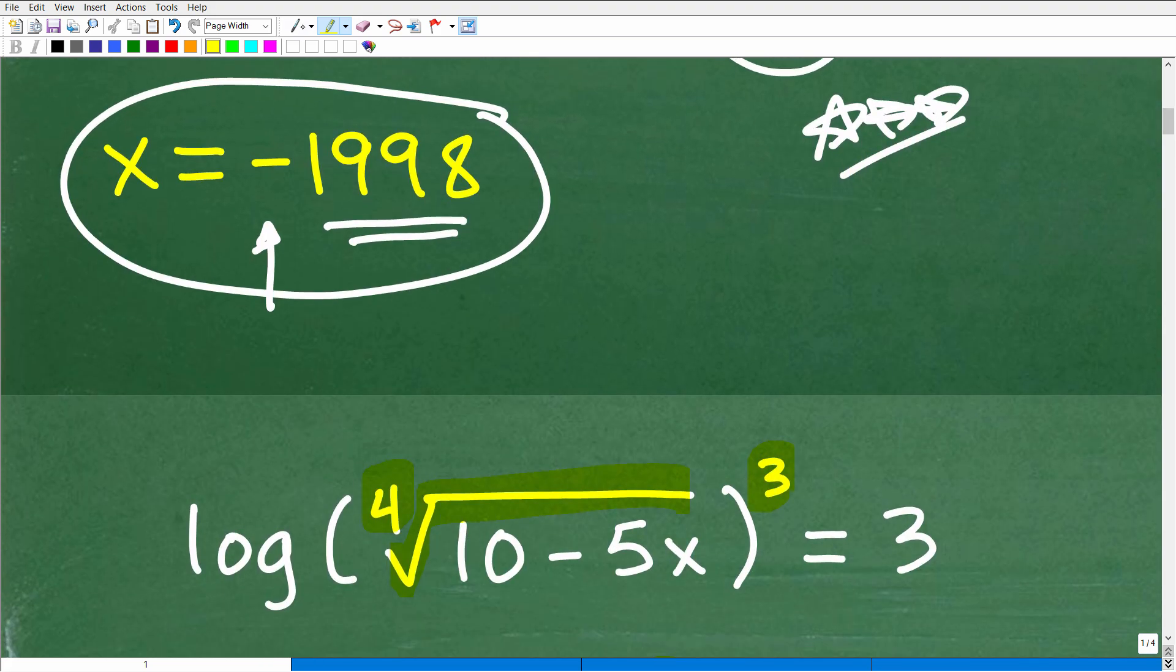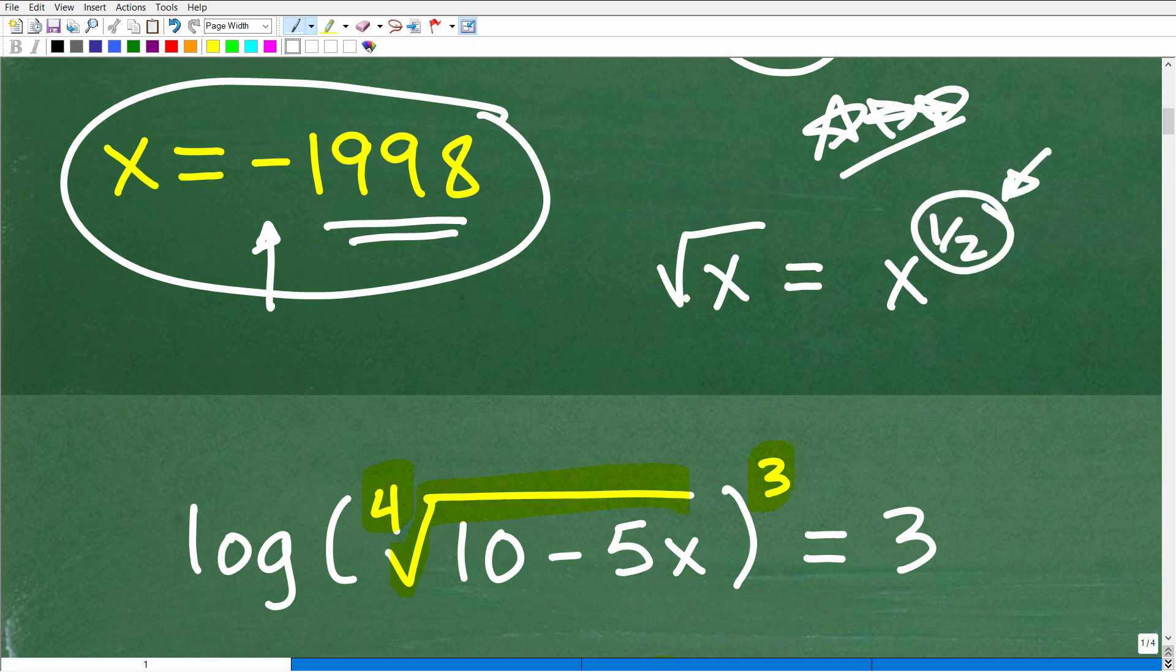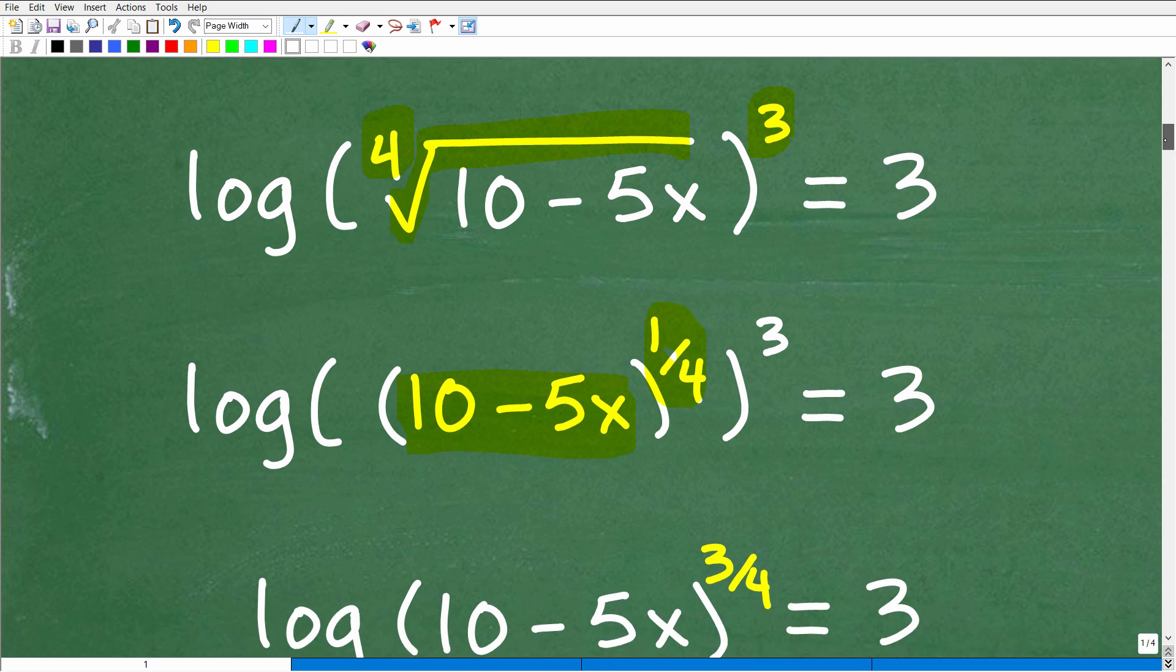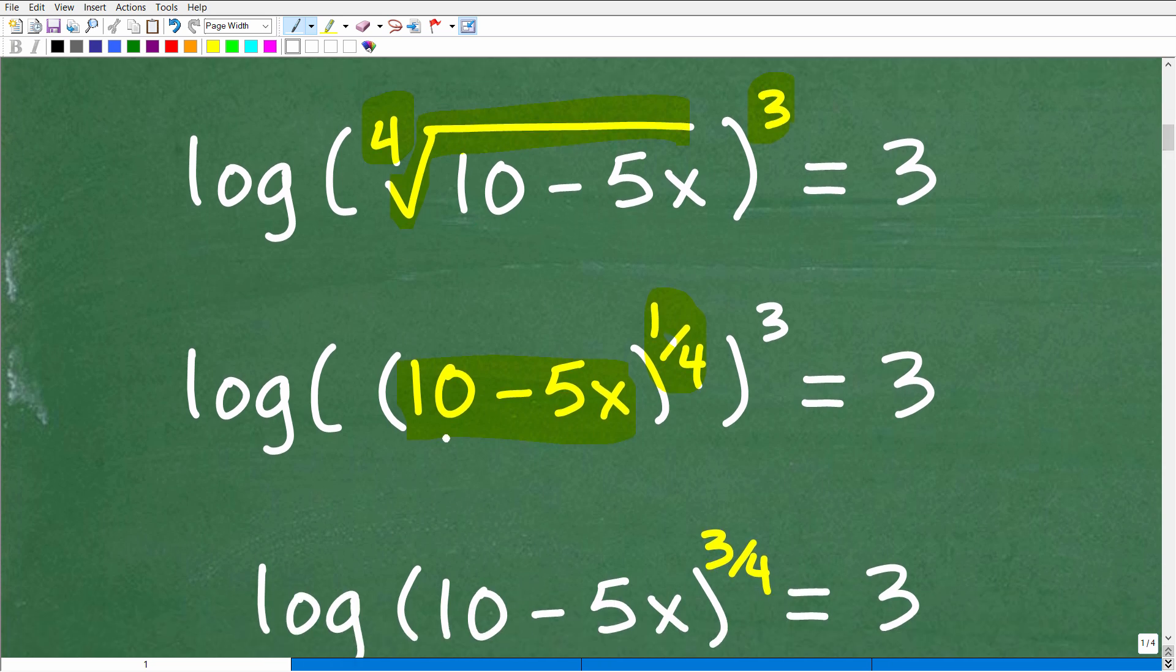This is the same thing as the fourth root of 10 minus 5x. Just to be clear, the square root of x is equal to x to the one-half power. This is what we call a rational exponent, and this is just a radical. There's really a little tiny two up there, but we never write that when it comes to square roots. So what would be the cube root? Well, the cube root of x is the same thing as x to the one-third power. So you need to be able to go from radical expressions into rational exponents. This is basic algebra, not basic basic, but stuff that you should have learned like in Algebra 1. So we're going to go ahead and rewrite this as 10 minus 5x to the one-fourth power, which is the same thing again as the fourth root of this, to the third power.